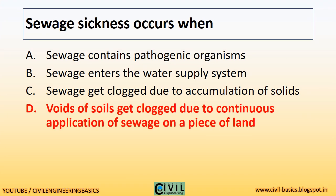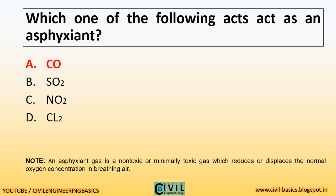Seward sickness occurs when voids of soils get clogged due to continuous application of sewage on a piece of land. An asphyxiant gas is a non-toxic or minimally toxic gas which reduces or displaces the normal oxygen concentration in breathing air.